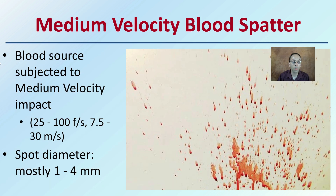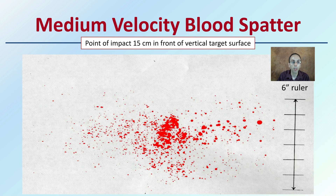For medium velocity blood spatter, the blood source is subjected to a medium velocity impact — a little faster than low velocity. Spot diameter is going to be smaller, mostly in the 1 to 4 millimeter range, because it's traveling at a quicker rate of speed. Shown here is the point of impact at 15 centimeters in front of a vertical target surface, with a six-inch ruler for comparison.